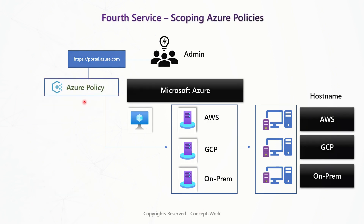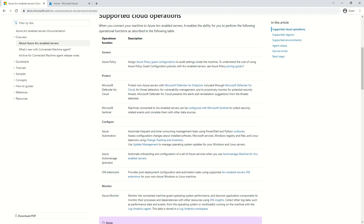The last cloud operation is scoping policies, which means you can scope Azure policies to these resources to perform cloud security posture management activities — checking compliance, adhering to certain standards, and so on. Apart from all these services, you can also use Azure Monitor, as it is a cloud operation supported by Azure Arc for Servers.